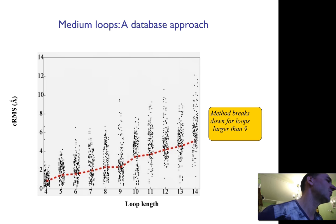Basically the database loop search breaks down somewhere at nine residues because then if you have longer loops you cannot find a matching hit in the database. So that's somewhere you see a jump here at 9, 10, you jump from two to three angstroms and basically start having too much error.